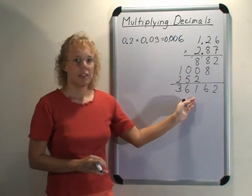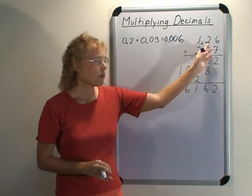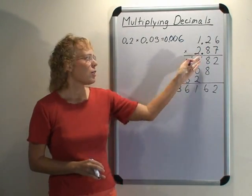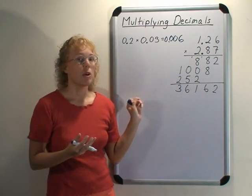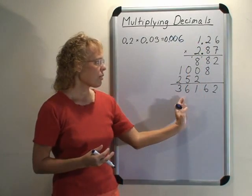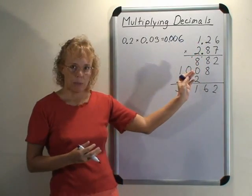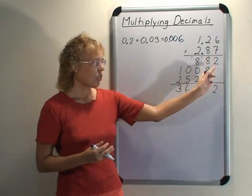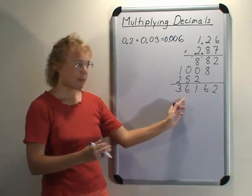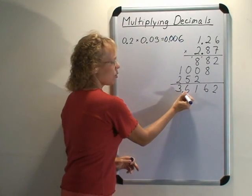Here's another example. I already multiplied it out. We have 1.26 times 2.87, and we first multiply as if there were no decimal points. Multiply all the way through here and then count how many decimal digits there are: one, two, three, four. So total four decimal digits, and so the decimal point goes here.